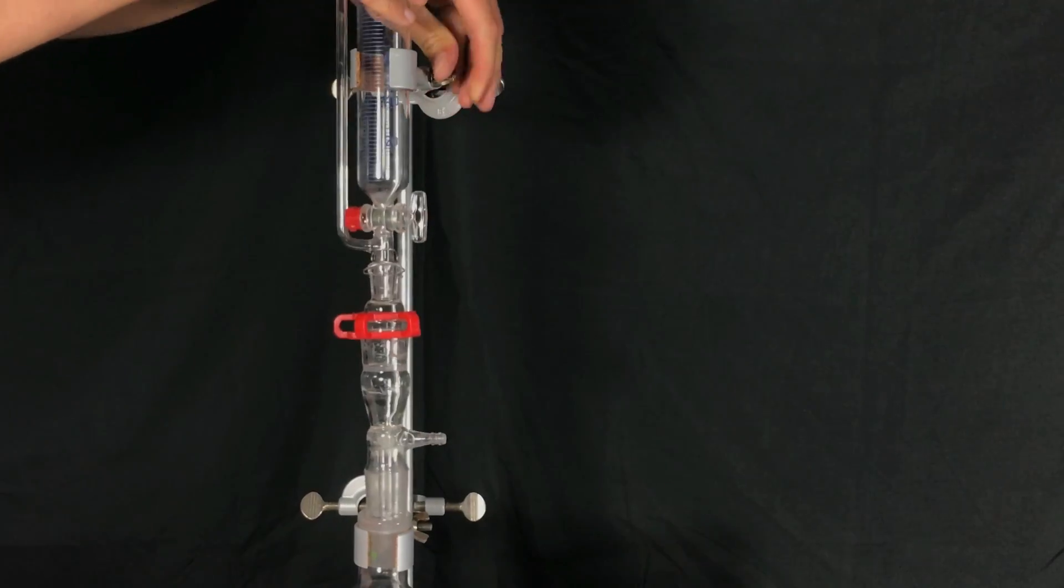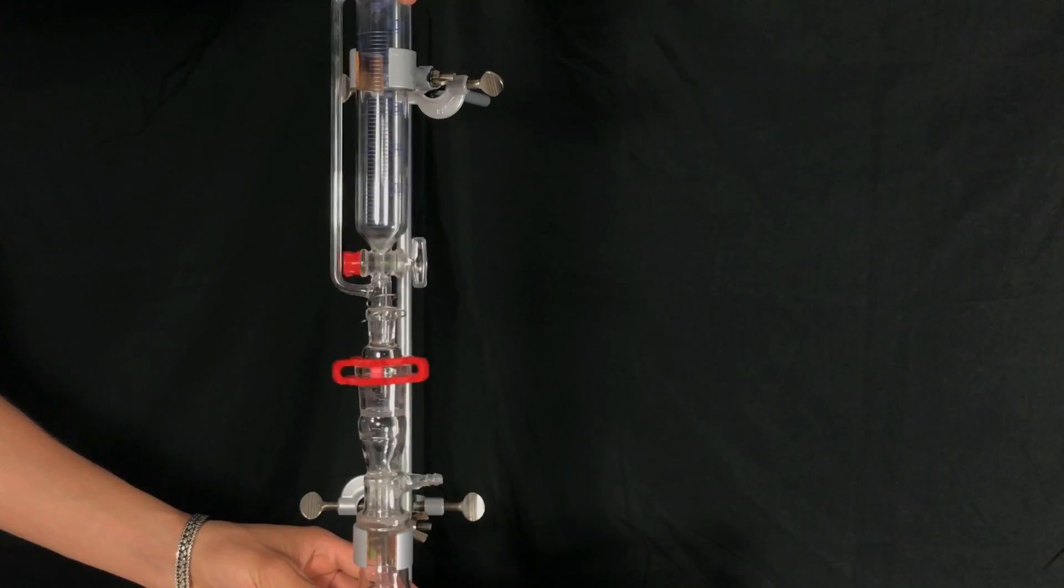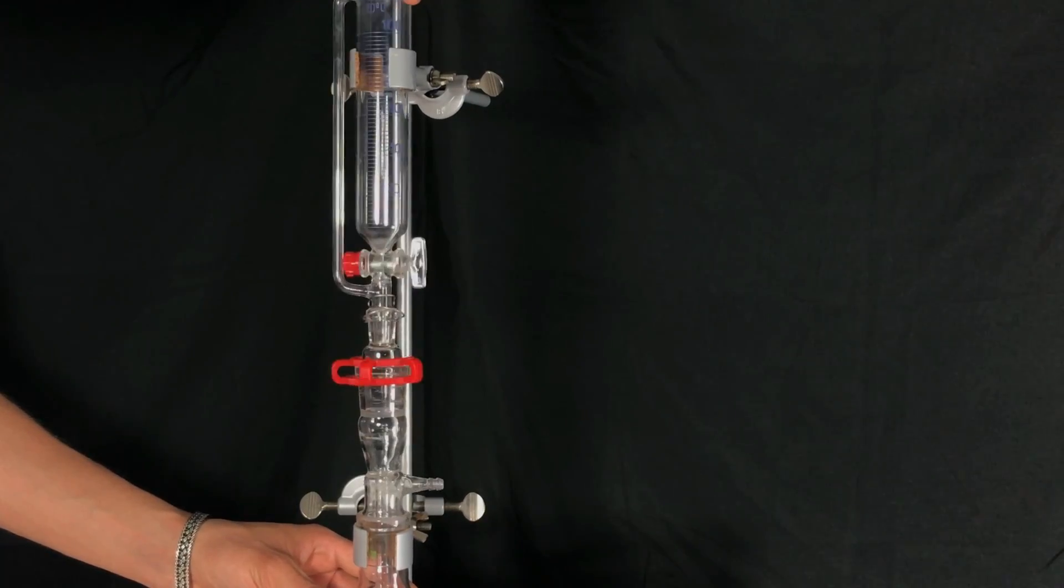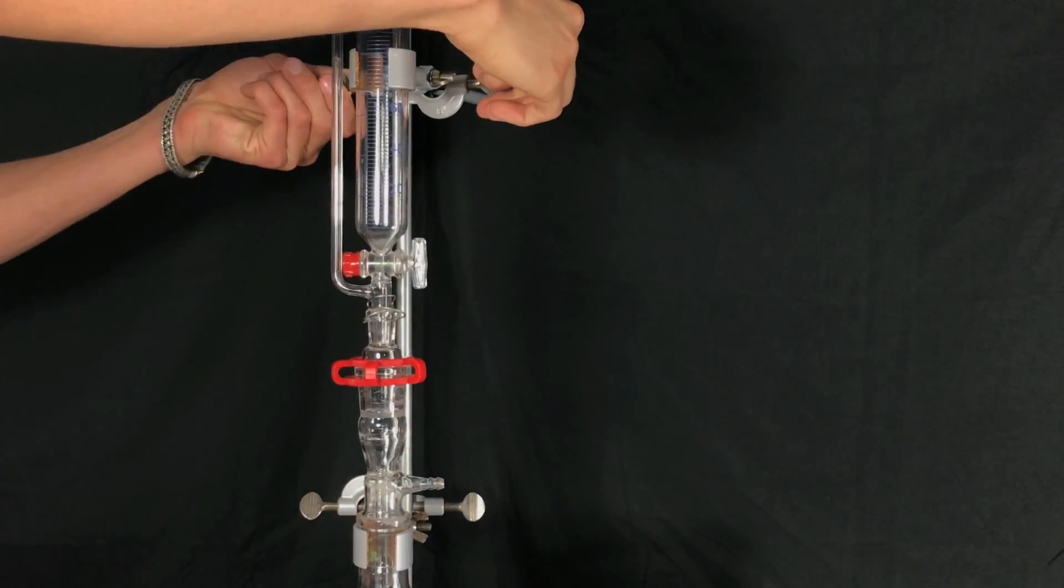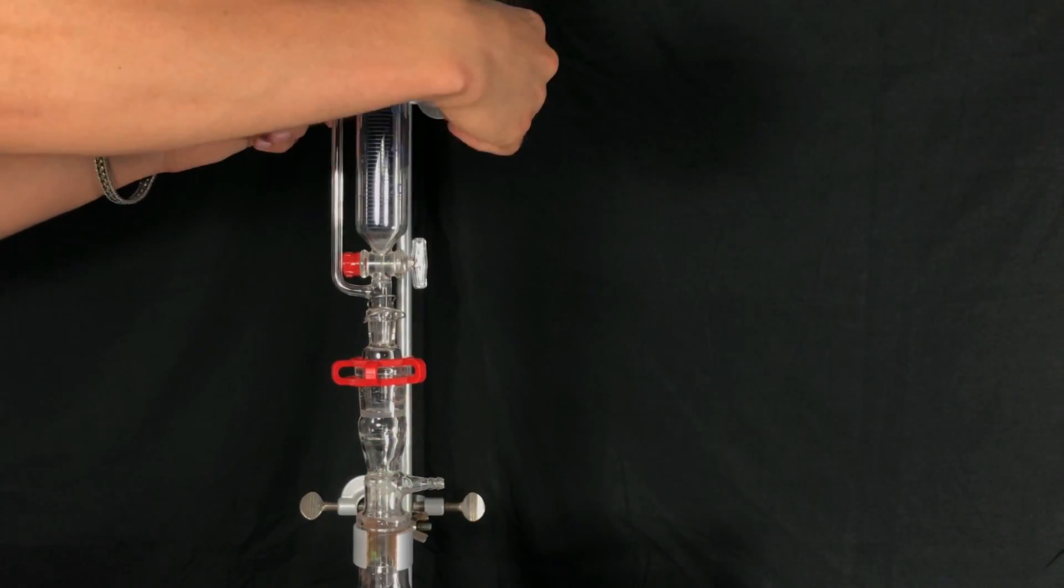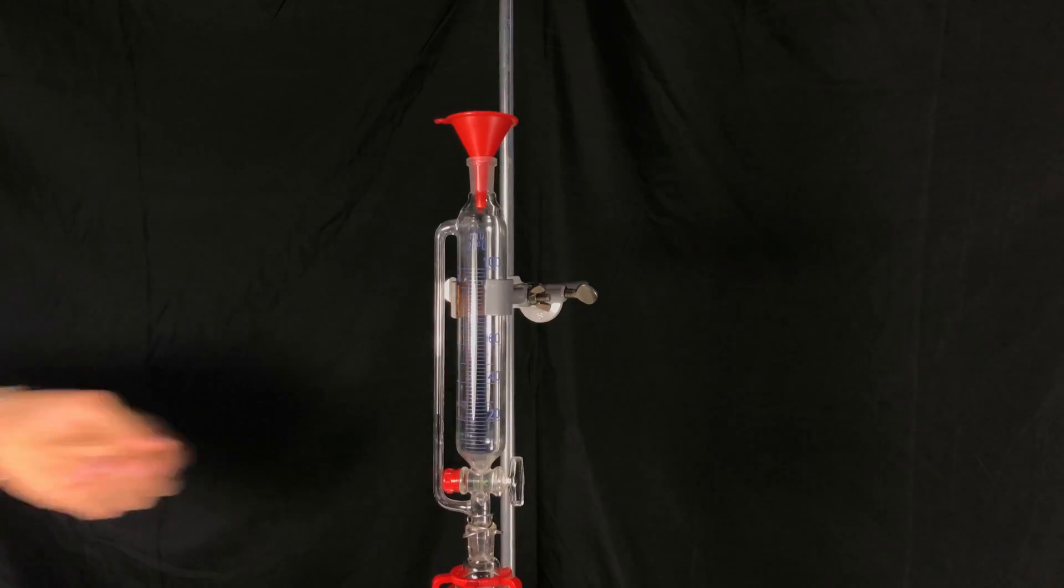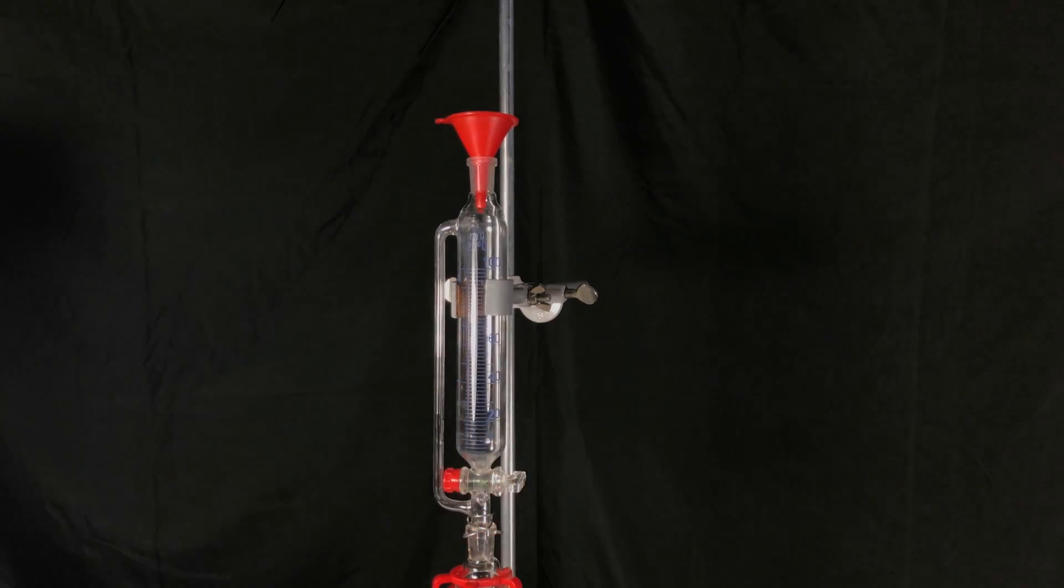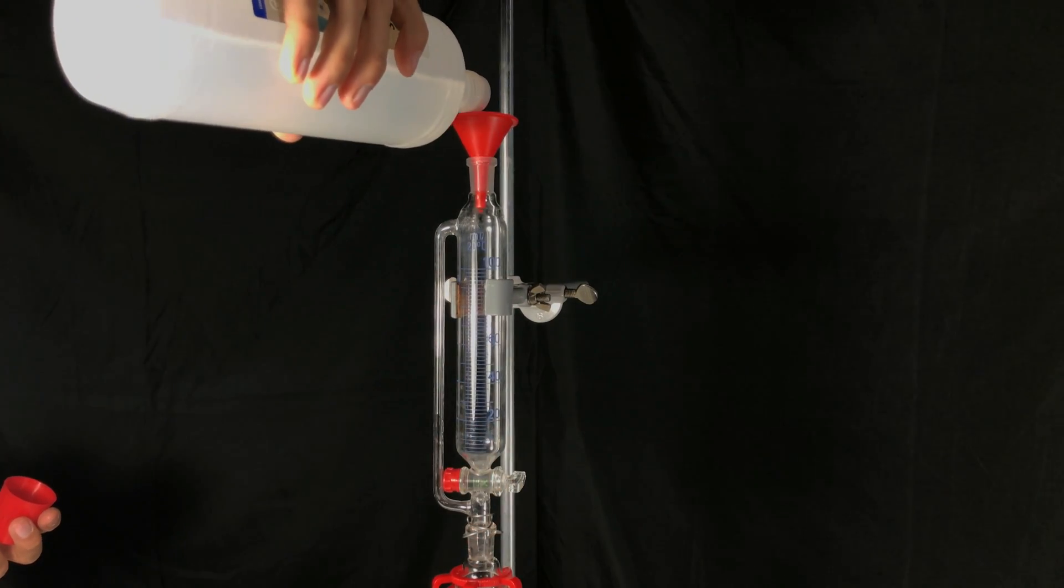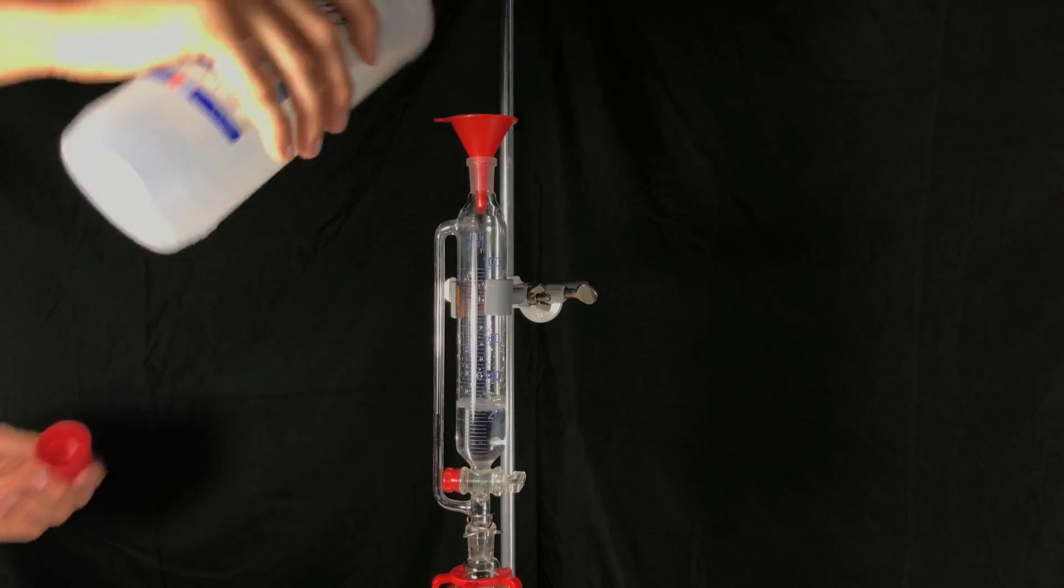An addition funnel was then lowered onto our round bottom flask. After that we prepare some dilute hydrochloric acid by first adding distilled water to our addition funnel.